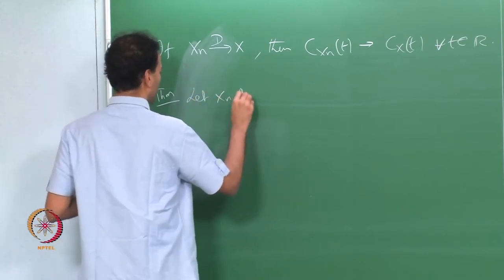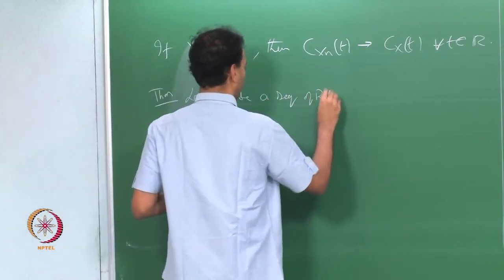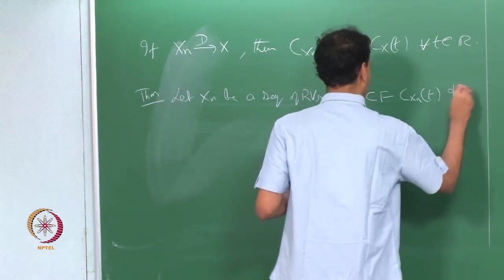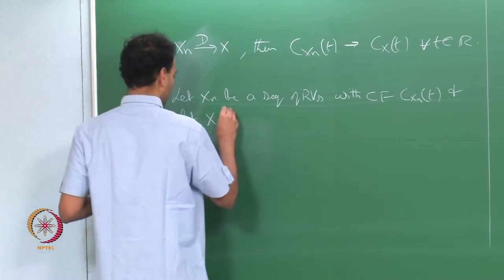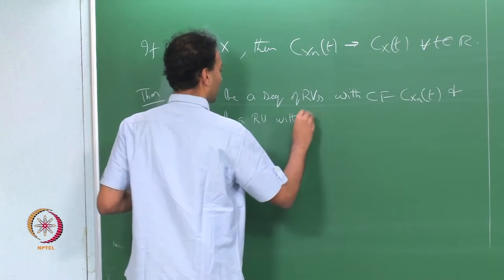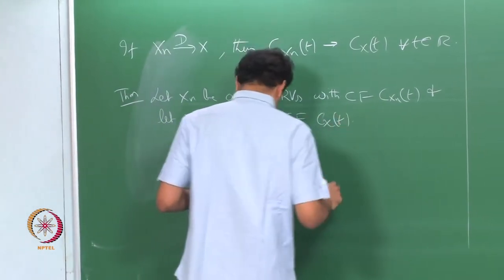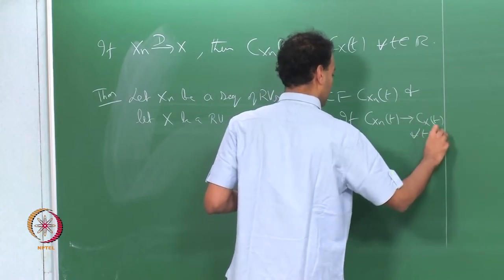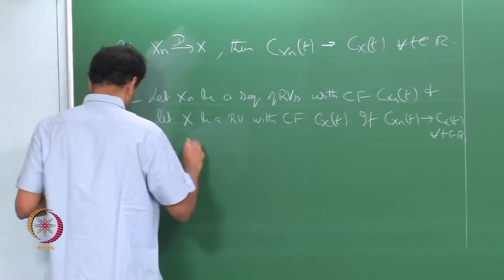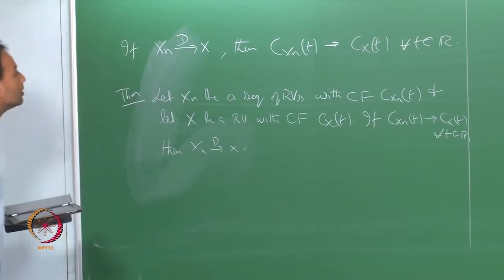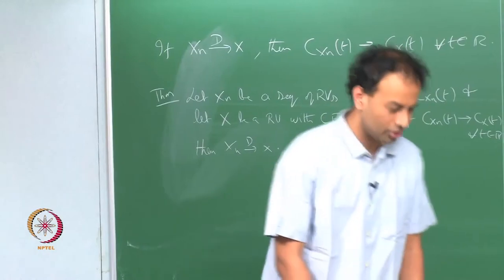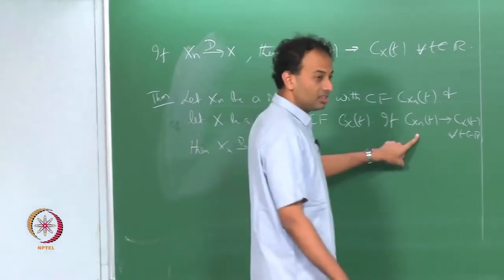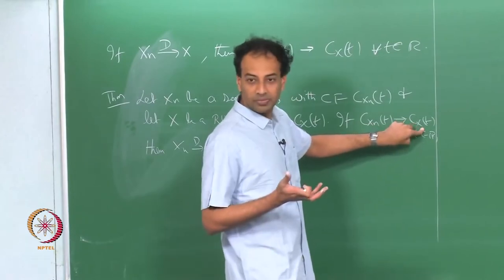Let x_n be a sequence of random variables with characteristic function c_{x_n}(t), and let x be a random variable with characteristic function c_x(t). If c_{x_n}(t) converges to c_x(t) for all t, then x_n converges to x in distribution.